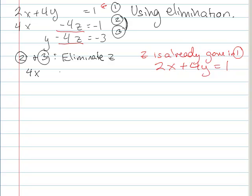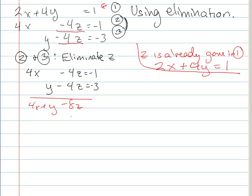So I've got 4X minus 4Z equals negative one and I have Y minus 4Z equals negative three. So I want to obviously add these down and get rid of that 4Z, but I can't right now because I'm off by negative. If I added it, I would get 4X plus Y minus 8Z and that's not what I want. I want that to be zero.